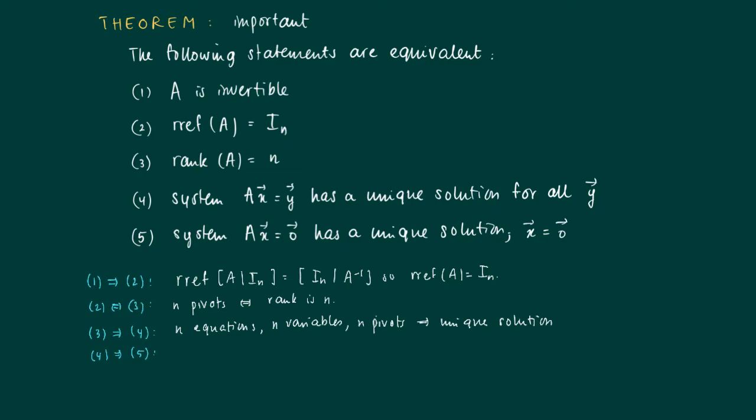From statement 4, we have an immediate consequence that 5 is true. It is immediate because the zero vector is a special y vector. So the system Ax = 0 has a unique solution, x = 0.